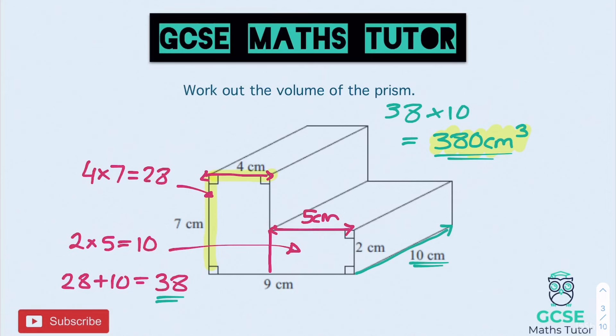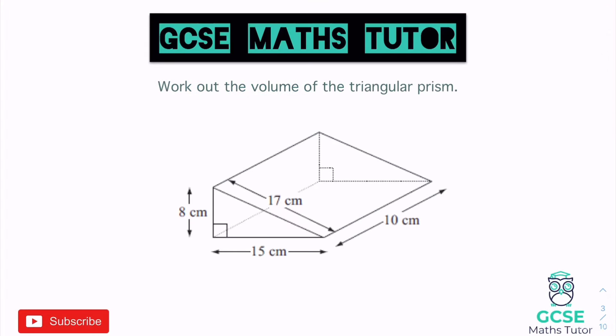Moving on, we're going to have a look at triangular prisms. For a triangular prism, the cross section is the triangle we can see on the front — in this case a right-angle triangle. To find the area of a triangle, the formula is half base times height, or you can do base times height and divide by two — whichever you prefer. We need to identify the correct pieces from the shape.